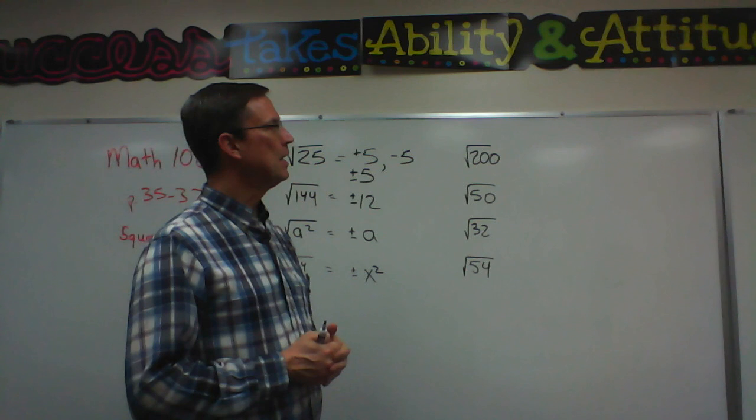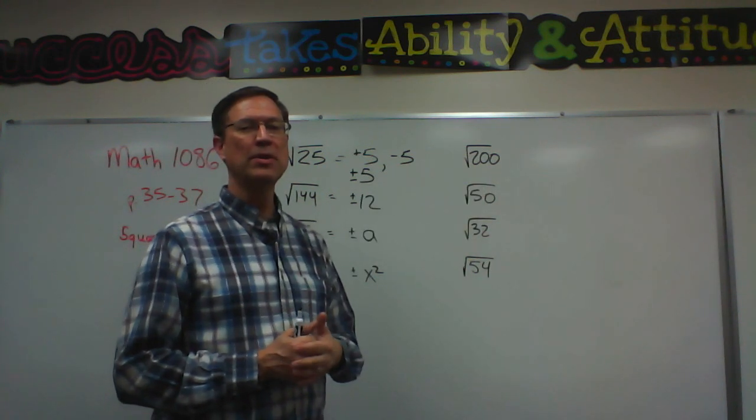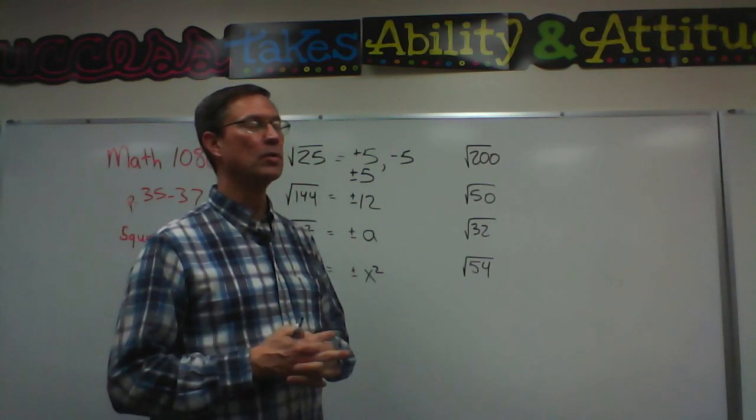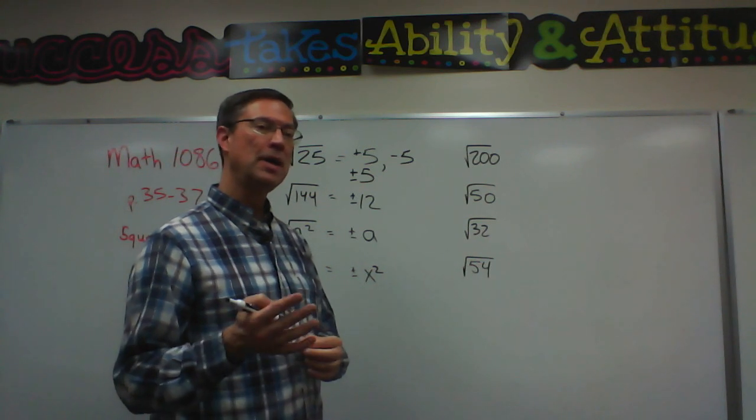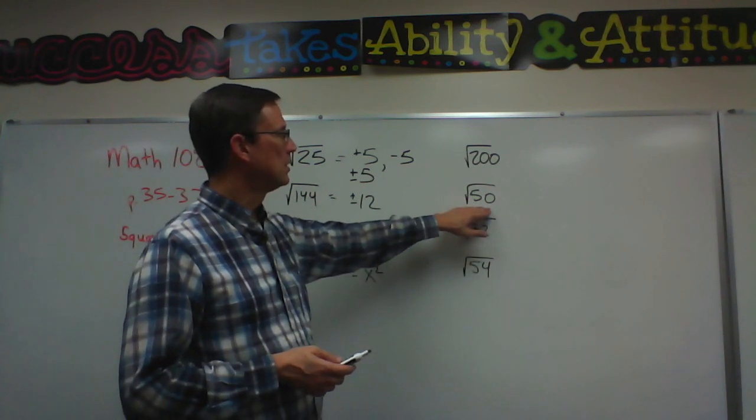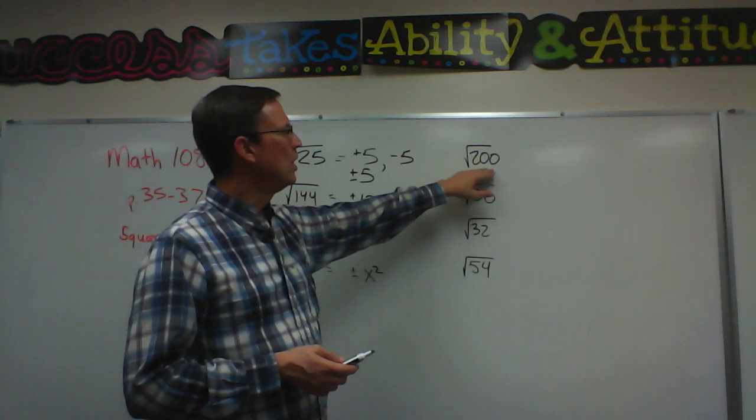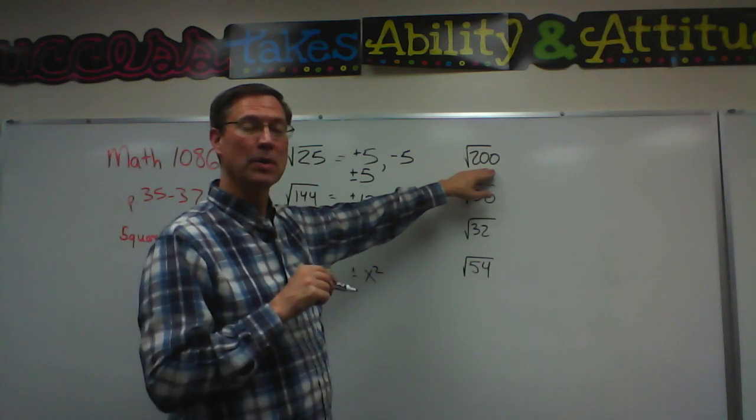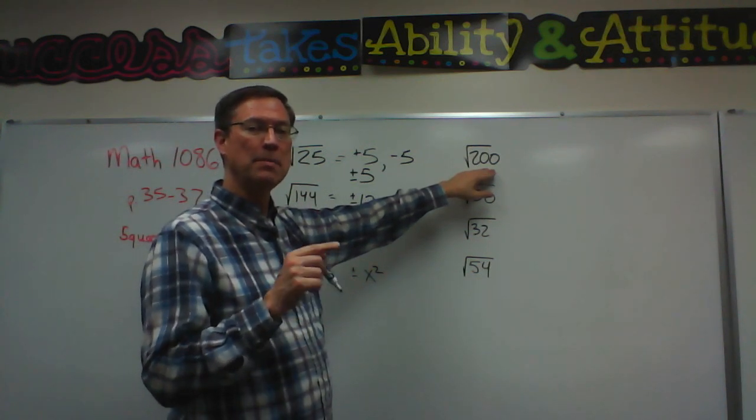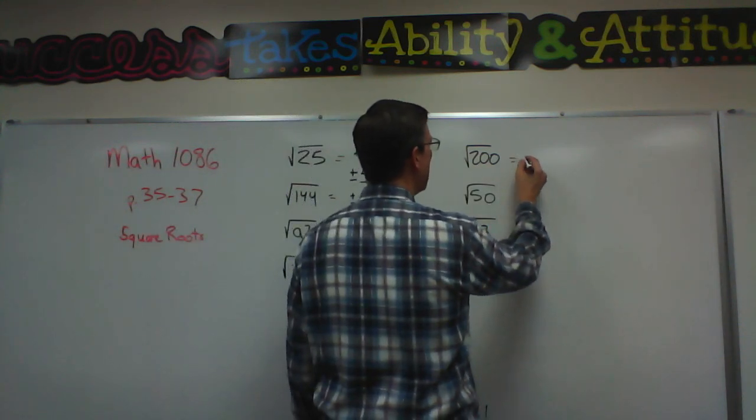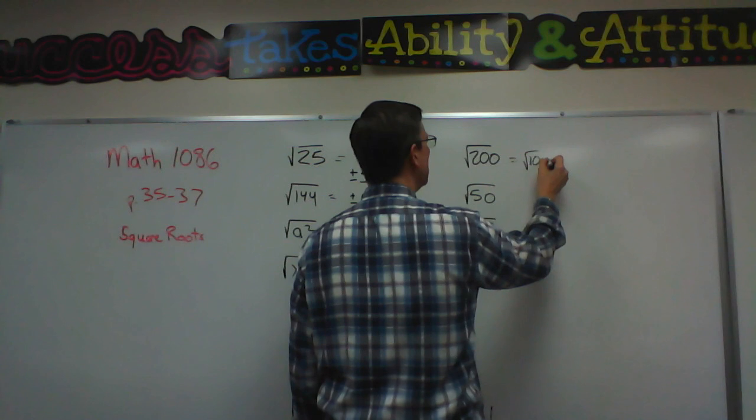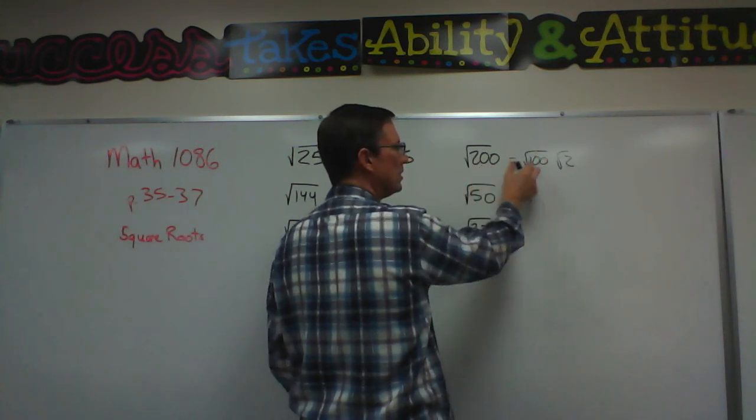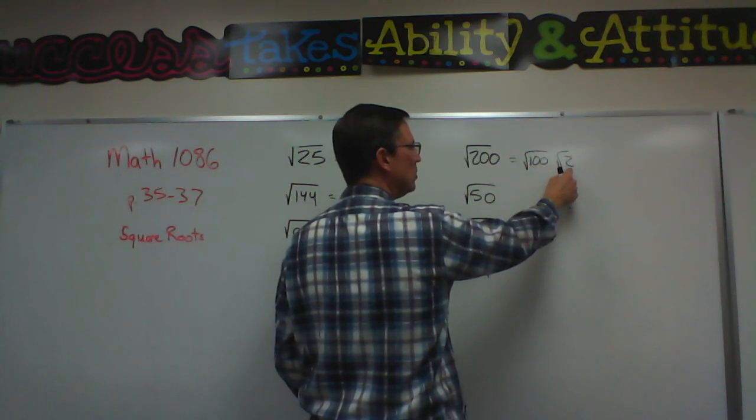So what the pace has us do when we have a large number like this is we try to think of a perfect square like 25 or 36 that multiplied times another number would give us this. So I'm thinking about 200. Yeah I could do 25 times 8 but there's a bigger perfect square: 100. What is 100? 100 is 10 times 10. So let me write this as the square root of 100 times the square root of 2. So I'm breaking this apart. 2 times 100 is 200.